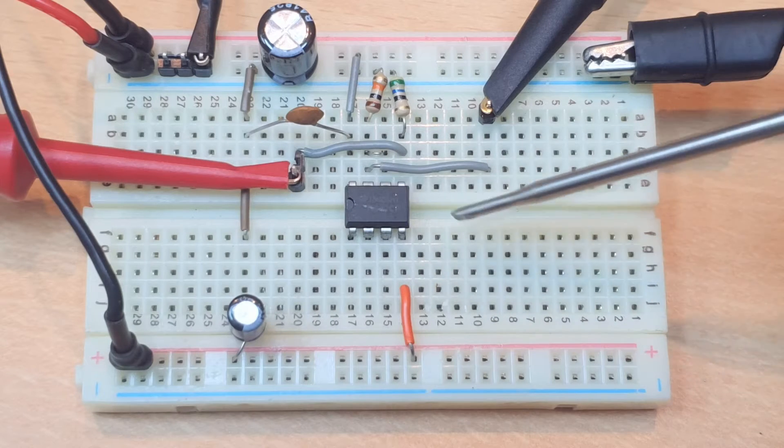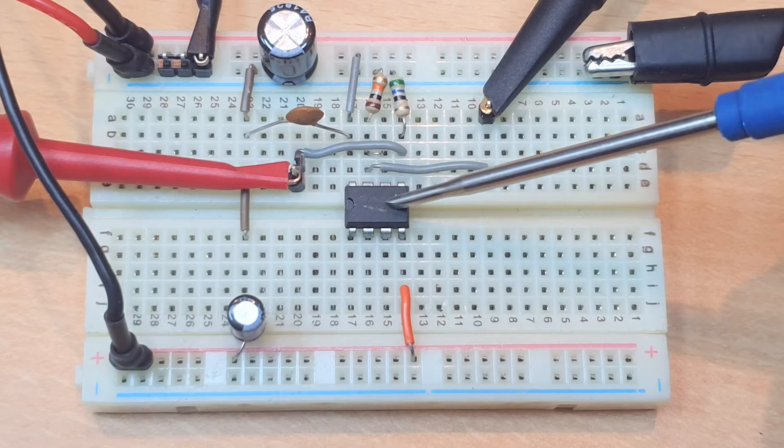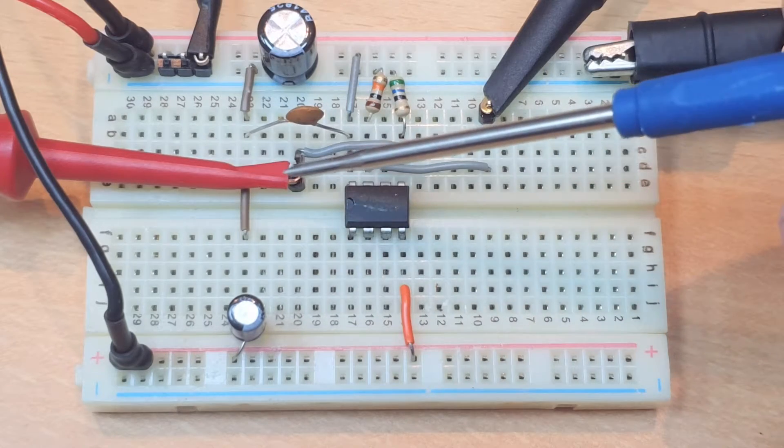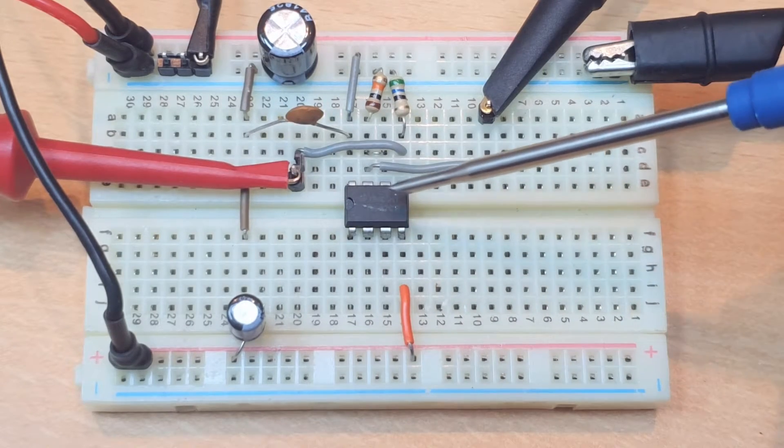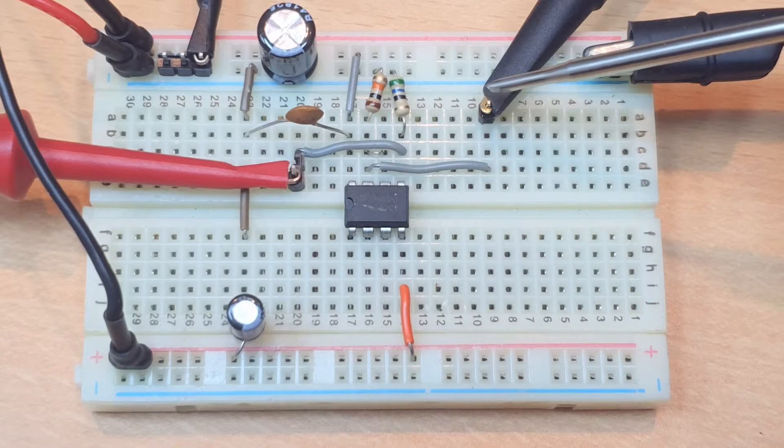We're going to use a very simple setup using an op-amp here in the middle of the breadboard, a symmetrical power supply, a signal generator exciting the op-amp and you're going to observe the output using the oscilloscope.